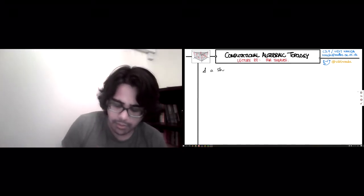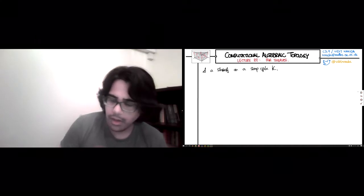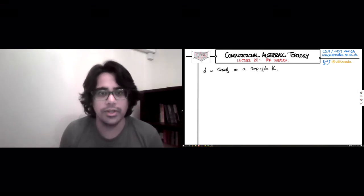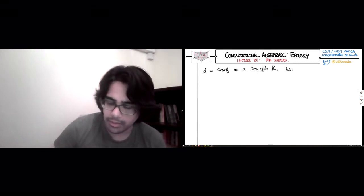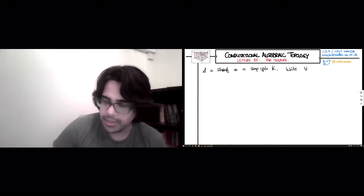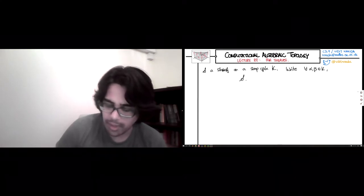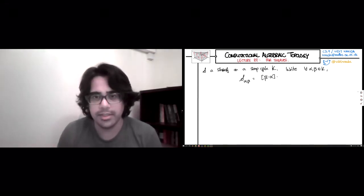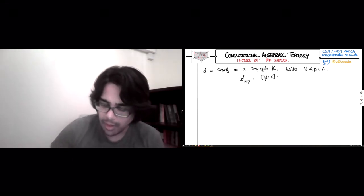So S is a sheaf on a simplicial complex K. And to make life easy, as before, we're going to have some notation for entries in the co-boundary operator. So let's write for all simplices alpha and beta in K, we write this expression: S sub alpha beta is this zero or plus minus one number, which is the usual simplicial incidence between beta and alpha.